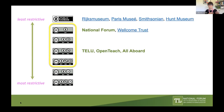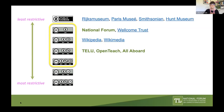Almost every week you read about another museum committing to sharing collections via a public domain or CC BY license. This gives those who teach and learn a huge trove of information we can use in our materials. Wikipedia and Wikimedia use a CC BY Share Alike license — their commitment to the commons. Another name for share alike is copyleft, in response to copyright. Anything shared on Wikipedia must be available under a less restrictive license, so Wikipedia can't use anything that's NC licensed, and anything you use from Wikipedia must be shared alike.